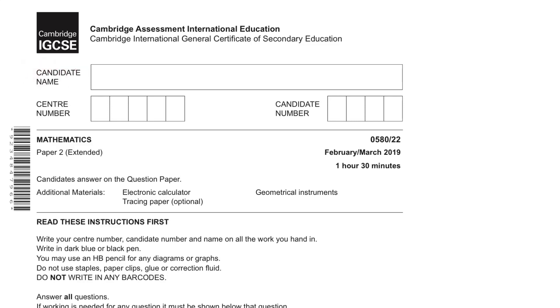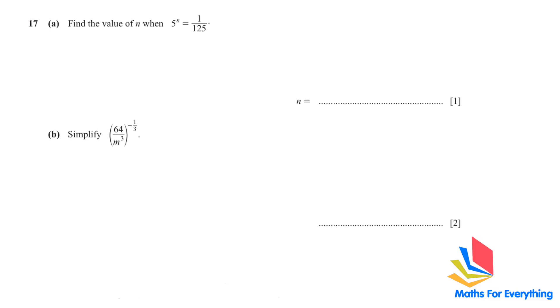We are going to solve Cambridge IGCSE mathematics paper 2 extended 0580 variant 2-2 February-March 2019 question number 17 onwards.